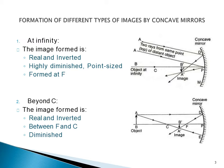Let's discuss the first case when we are keeping the object at infinity. In this case, the image formed is real and inverted. It is highly diminished — as we can see, the image B'A' is inverted and real — and it is formed at the focus of the concave mirror.